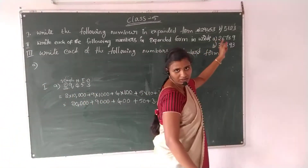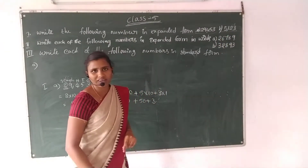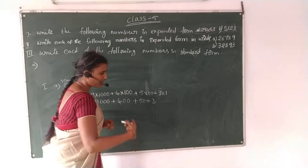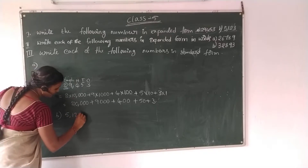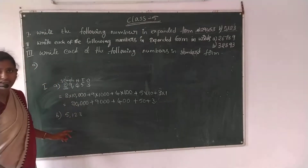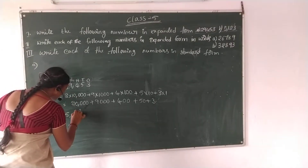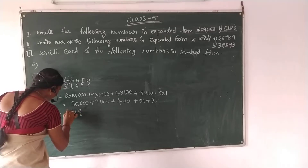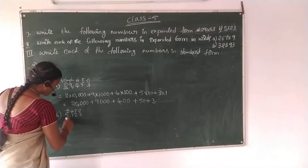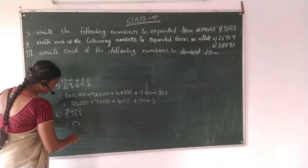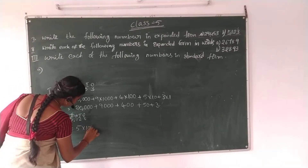Let's take the second one, B. The number is 5,123. First, identify the place values: 1s, 10s, 100s, 1,000s. So 5 into 1,000, plus 1 into 100.